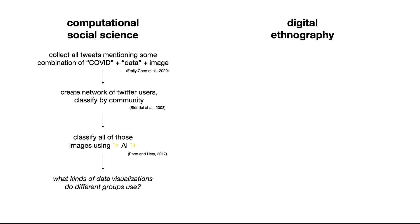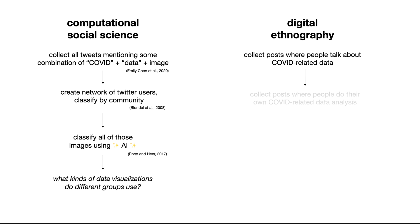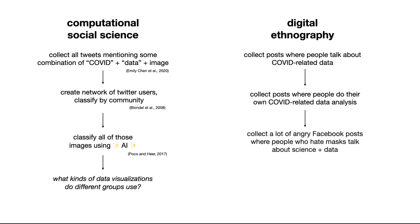Do anti-mask groups tend to use 3D bar charts compared to the New York Times graphic section? We also conducted a digital ethnography using an iterative process. We collected posts where people talk about COVID-related data, then posts where people do their own COVID-related data analysis, then angry posts where people who hate masks talk about science and data. And we ultimately asked: what does 'follow the data' mean for anti-mask communities?